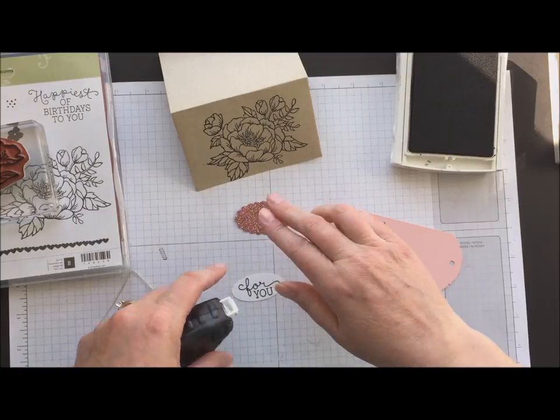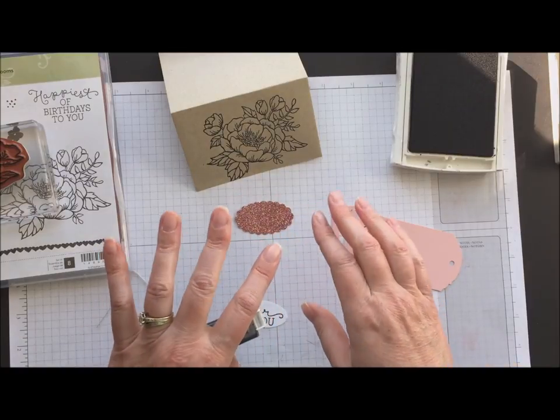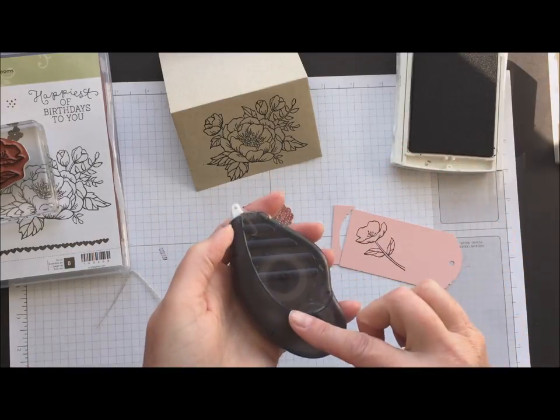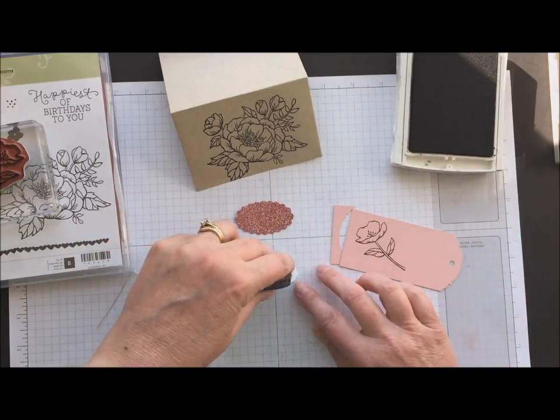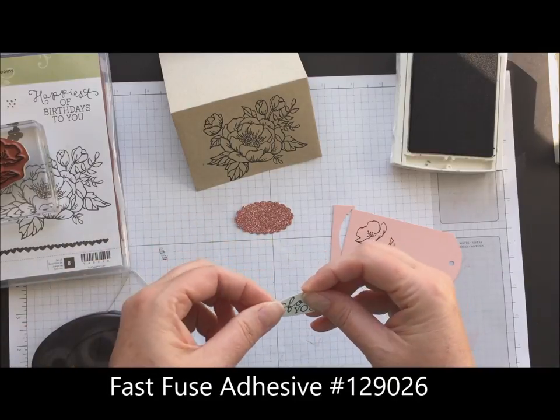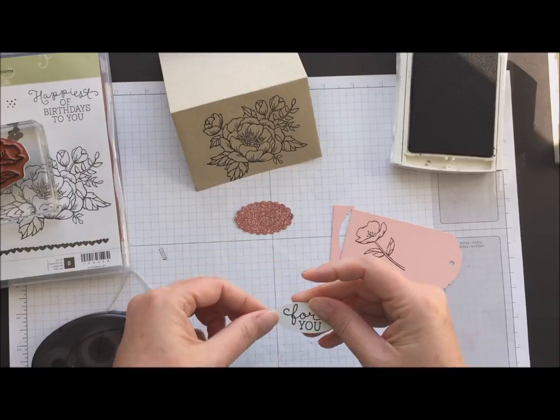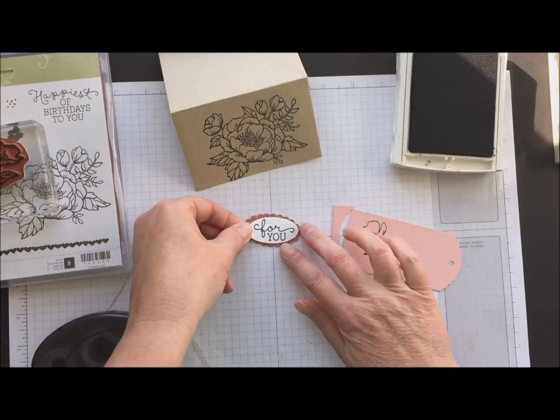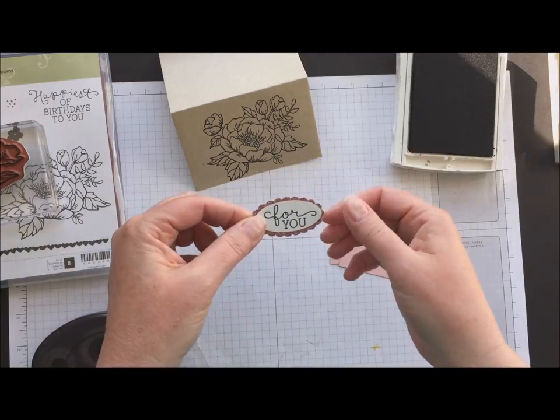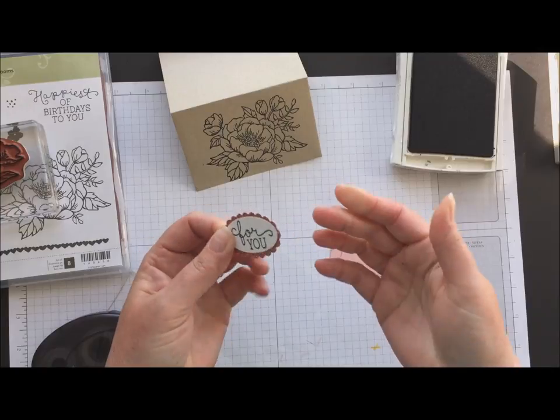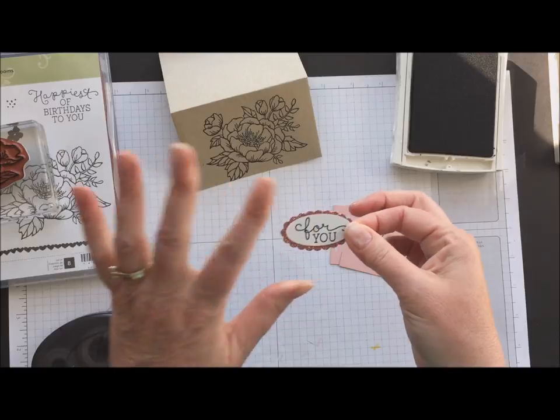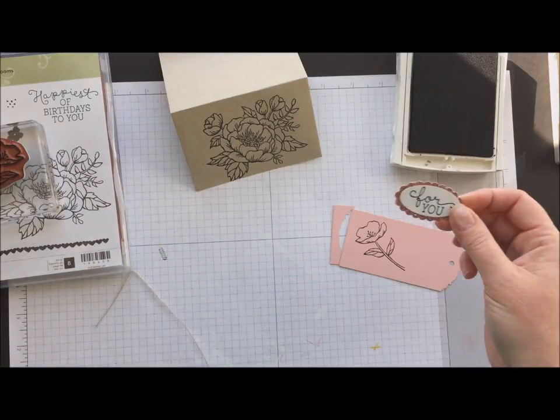Now the glimmer paper doesn't really like our snail adhesive. Those two are like oil and water. They really don't mix so I am going to pull in the fast fuse to attach that. It'll stick for a little bit but then it's kind of done and you'll notice that it'll start to fall apart. So fast fuse is a little bit of a stronger adhesive and I do like that when I'm working with the glimmer paper. You could use the tear and tape. You could probably use the Tombow multi-purpose glue but that fast fuse works pretty quick and painless.